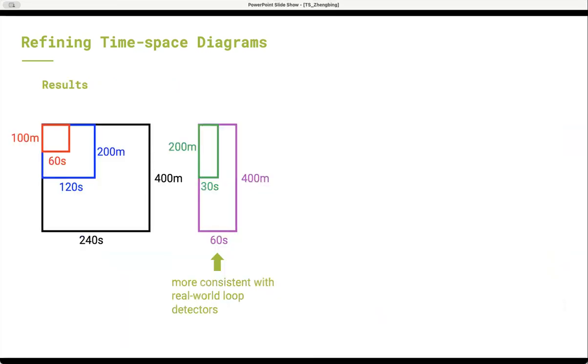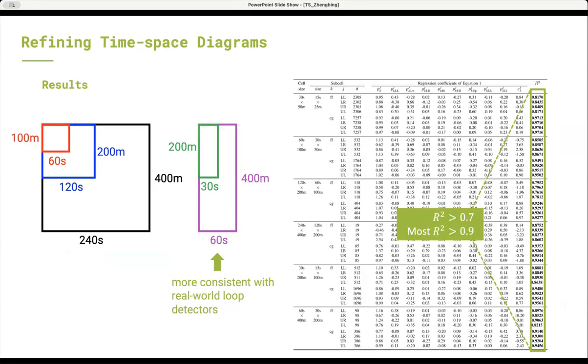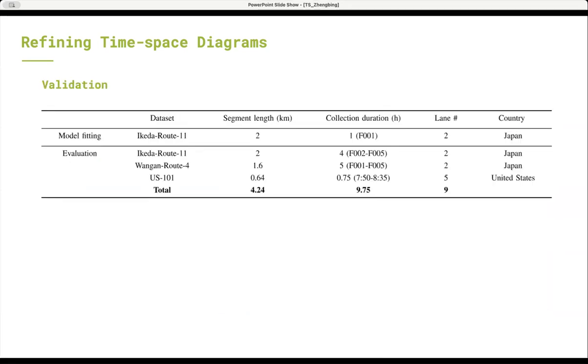We only take two groups of cell sizes as example to present results and do further tests. One group of settings is more consistent with the time-space distribution of data collected by real-world loop detector. The fitting results are surprisingly ideal. All r-squares are larger than 0.7 and most are larger than 0.9.